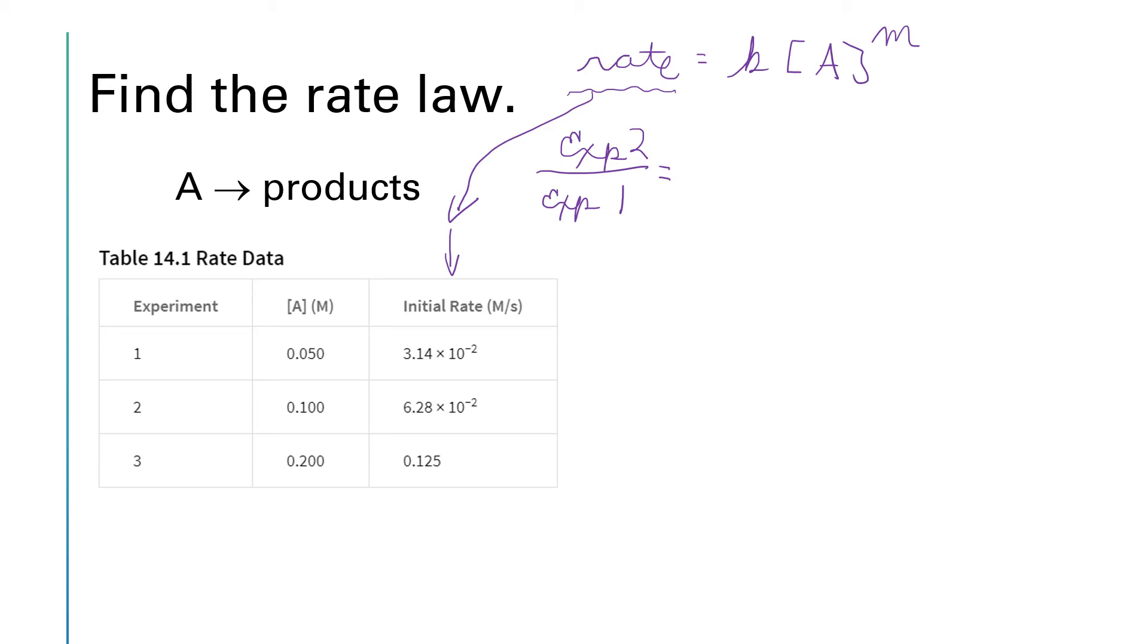So for experiment two, the rate was—I'm going to change this to regular notation, not scientific notation, that's kind of overkill—0.0628, and then divided by the rate for experiment one, which was 0.0314.